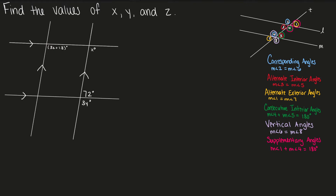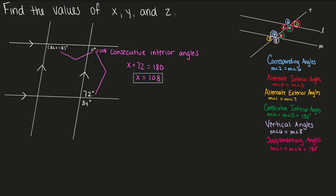Next, we have two sets of parallel lines. First, x and 72 are consecutive interior angles — they're on the same side of the transversal and on the inside of the parallel lines — so x + 72 = 180, which means x equals 108. Next, 3z + 18 and x are corresponding angles, because they're on the same side of the transversal and on the same side of the parallel lines. Corresponding angles are congruent, so 3z + 18 = 108, giving 3z = 90 and z equals 30.